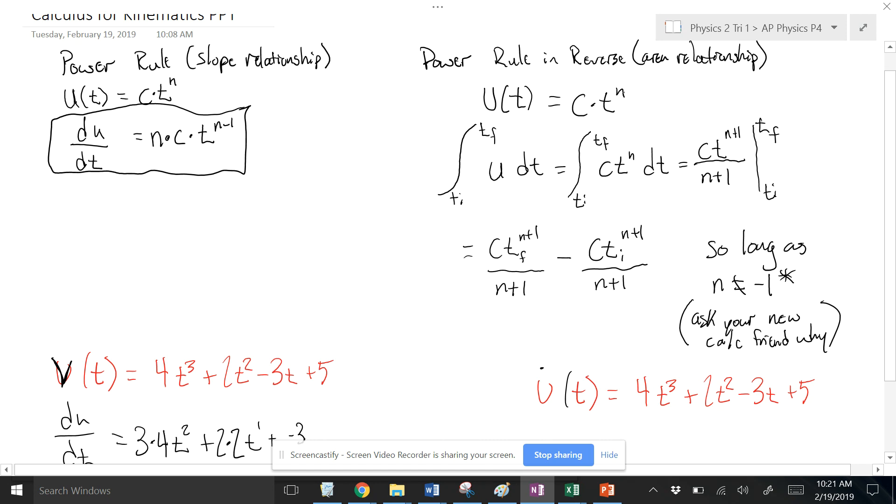Rather than pulling n down and multiplying it by the constant here and then decreasing this, if you see what I'm going to do here, I'm going to add 1 to n, and then I'm going to divide by that. So you see how this was ct to the n becomes ct to the n plus 1, and then that n plus 1 I'm going to pull down and I'm going to divide by that out in front.